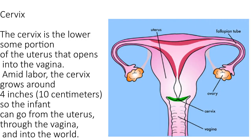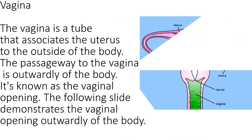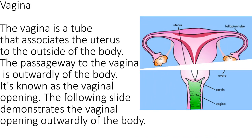Cervix. The cervix is the lower portion of the uterus that opens into the vagina. During labor, the cervix grows around four inches, or ten centimeters, so the infant can go from the uterus, through the vagina, and into the world.